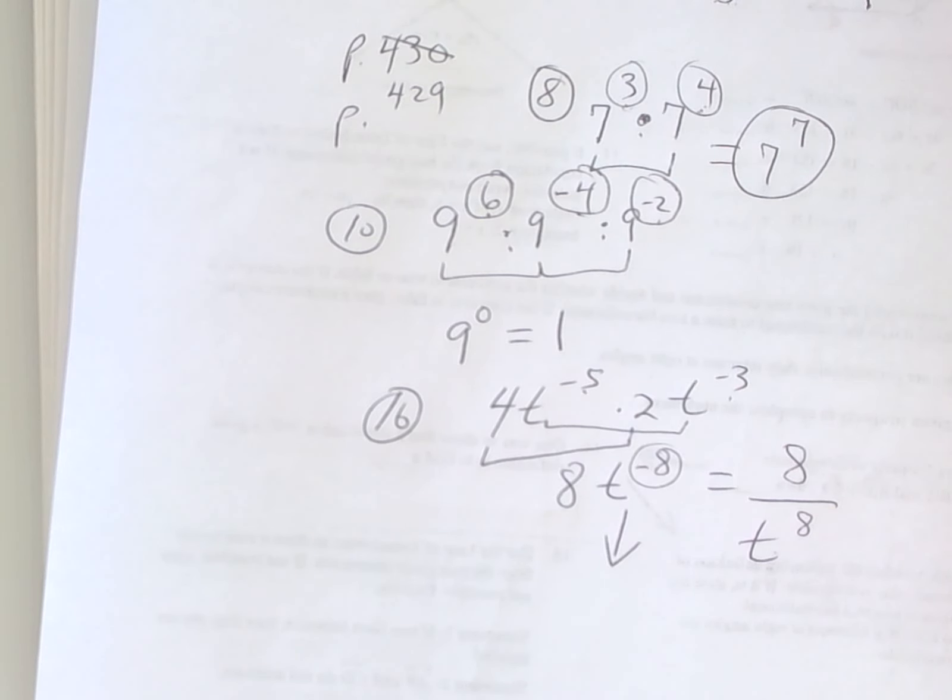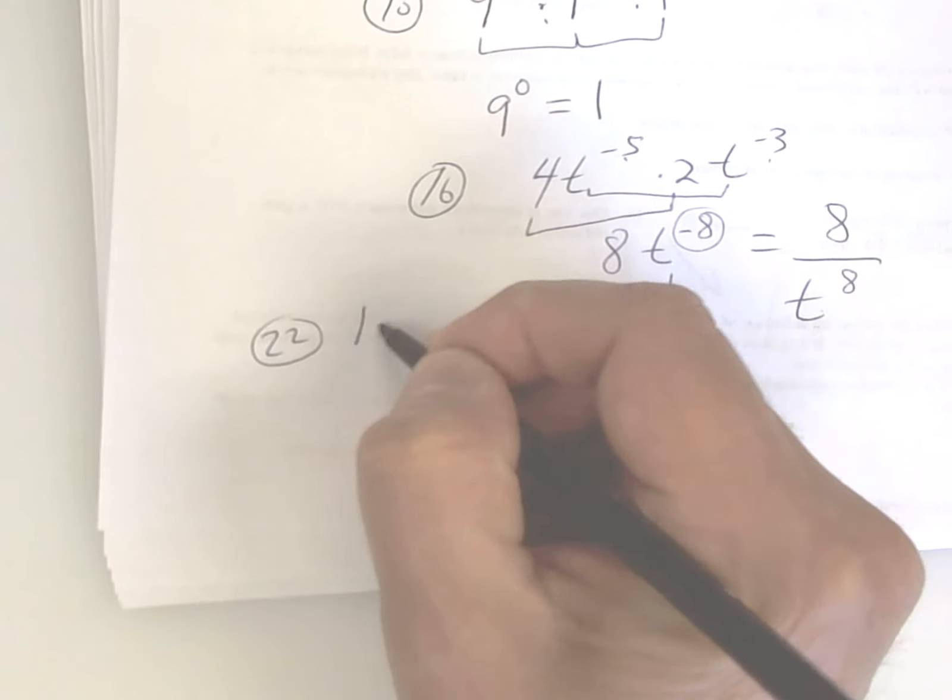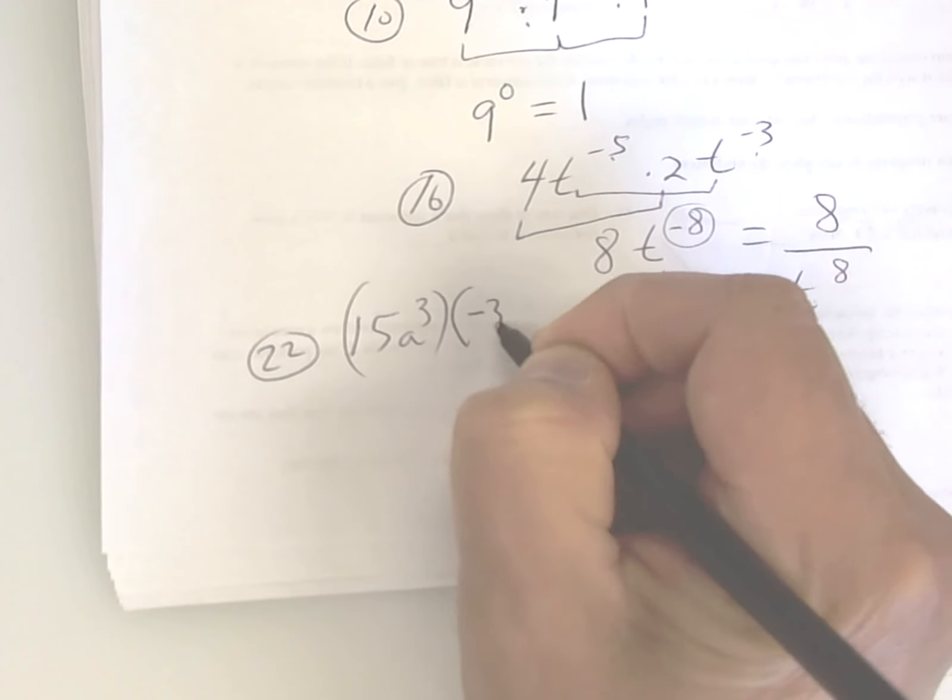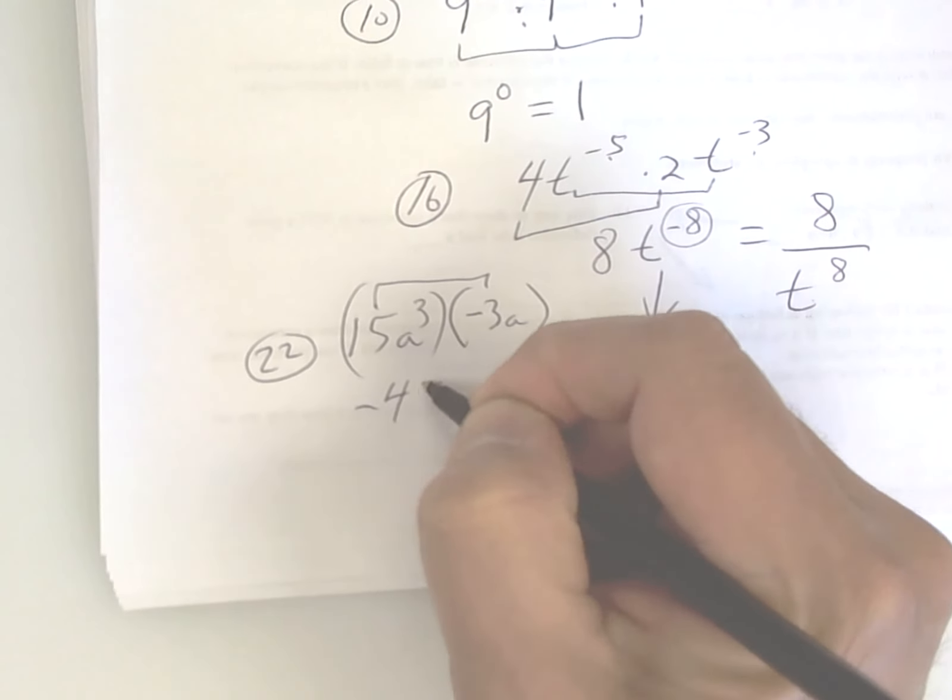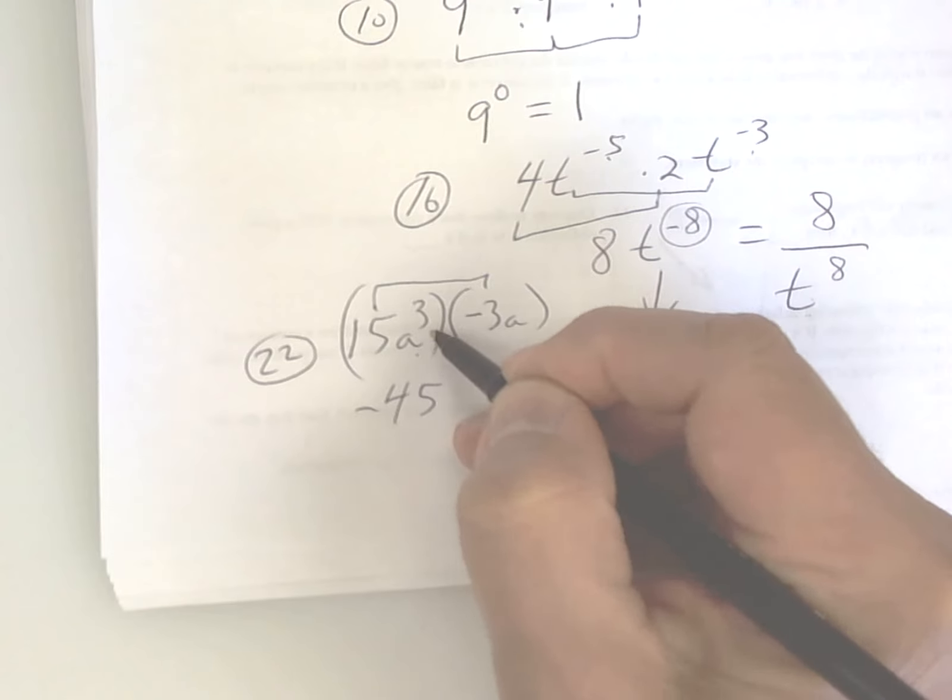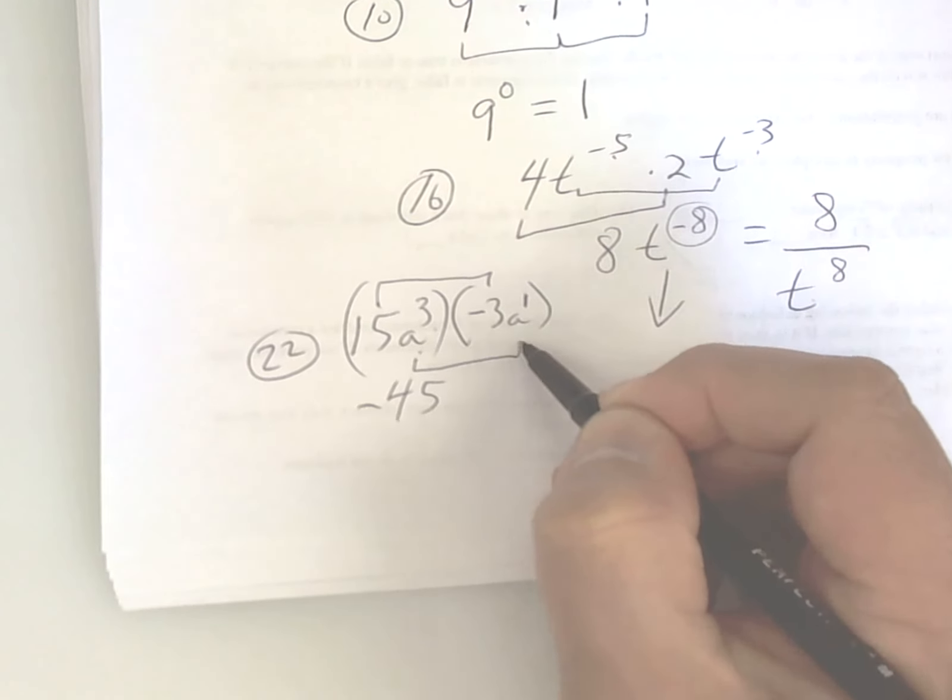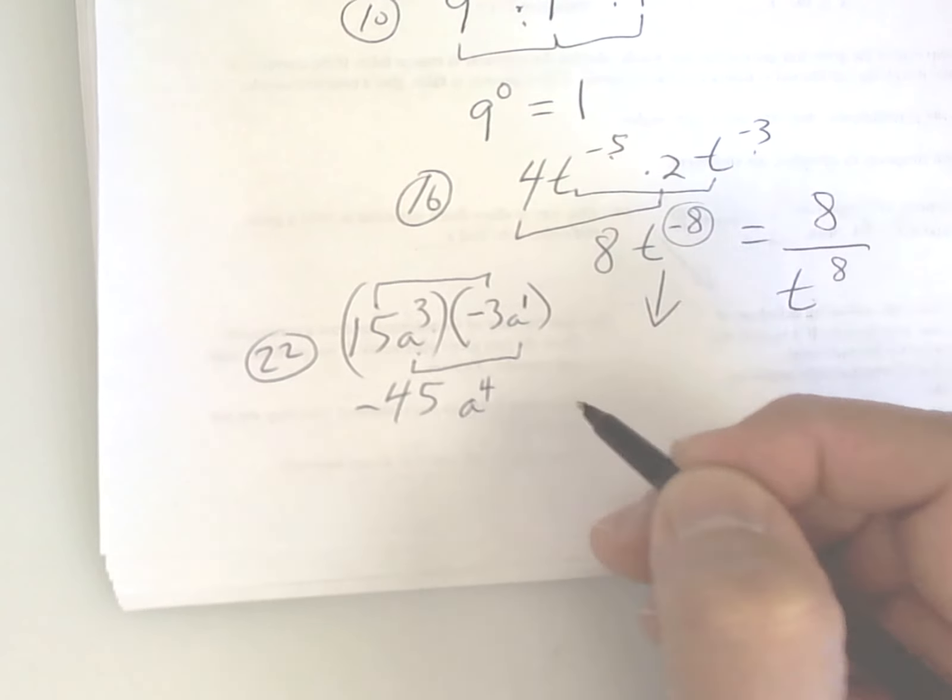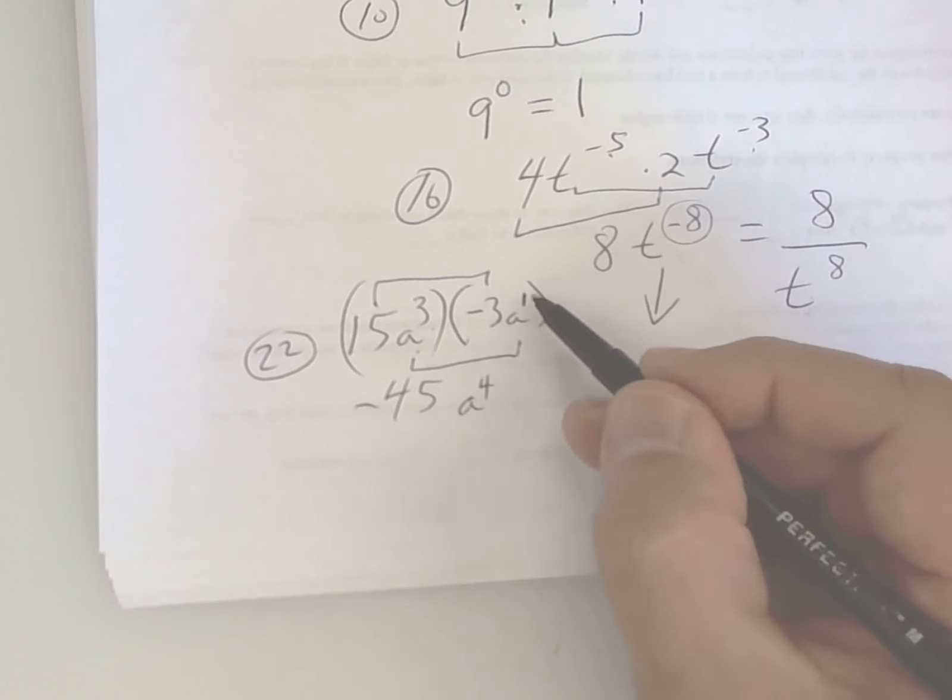Number 22. Okay, you ready? Ready. Well, 15 times negative 3 is negative 45. This is a to the 3rd power, this is a to the 1st power. You have the same base, so you add up that 1 plus the 3 and get a to the 4th power. A lot of kids don't know, but you put a 1 up there. So 3 plus 1, is a to the 3 plus 1 is 4.